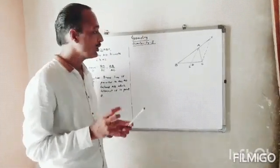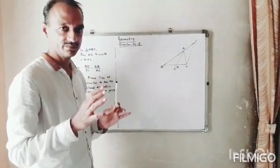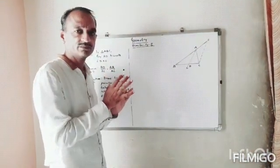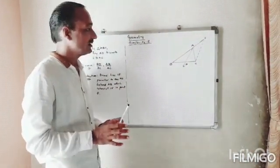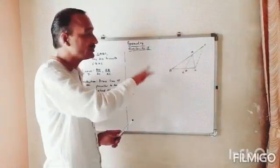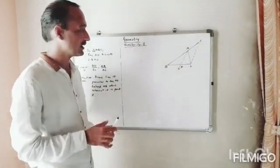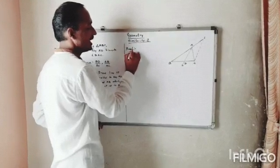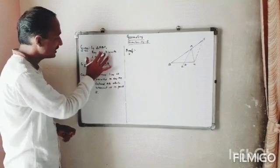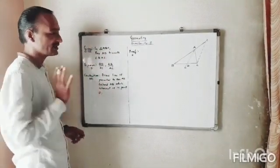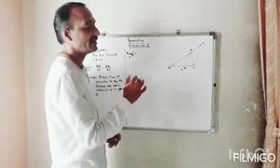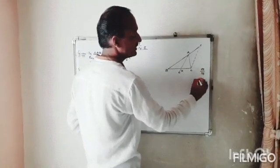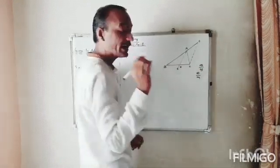This is generally known as the angle bisector property or the seven-step theorem. They won't ask you the entire theorem — just the application part for two marks, or when you are using the property in a sum for half or one mark. Whenever you don't know the proof — if you have written the diagram, given, to prove, and construction perfectly, but in the proof you know nothing — you will get zero, whether it is three marks or four marks. So to get substantial marks, you must write the proof.